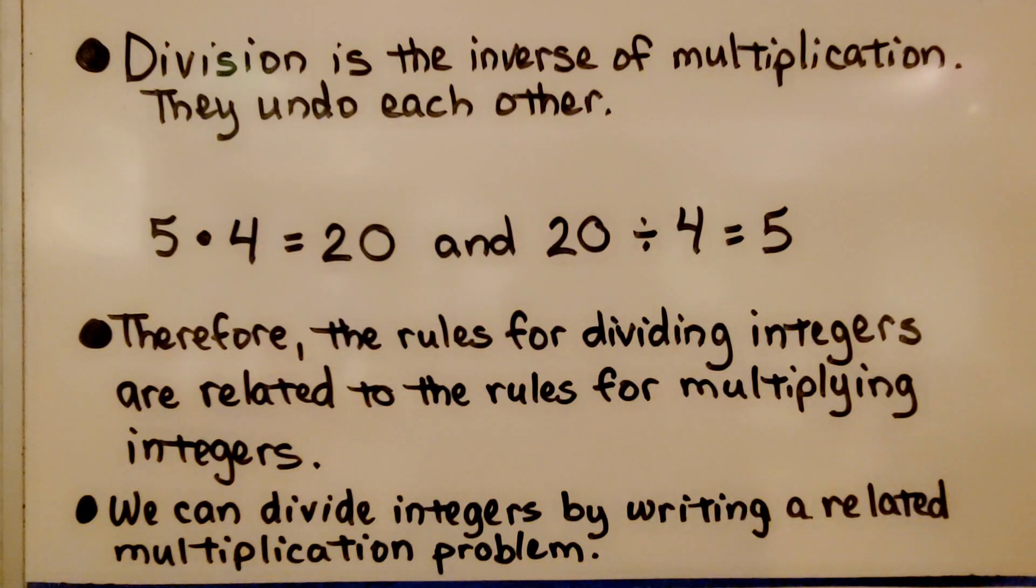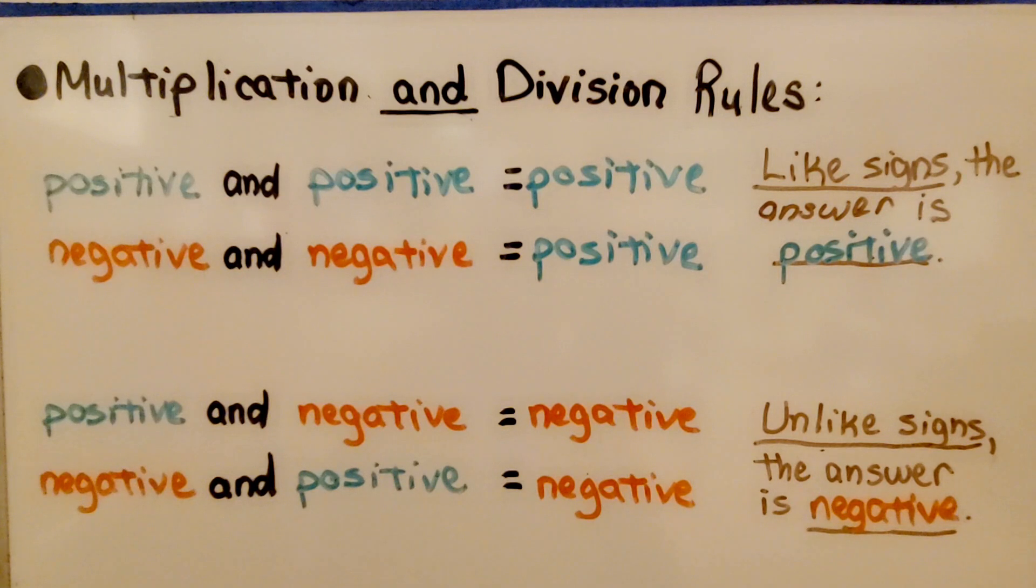Therefore, the rules for dividing integers are related to the rules for multiplying integers. We can divide integers by writing a related multiplication problem. So because division is the inverse of multiplication, multiplication and division share the same rules for multiplying and dividing integers.